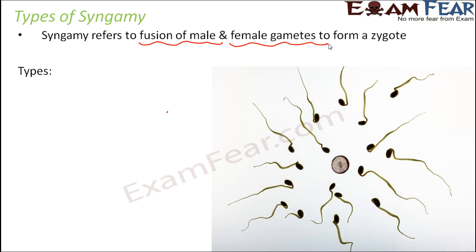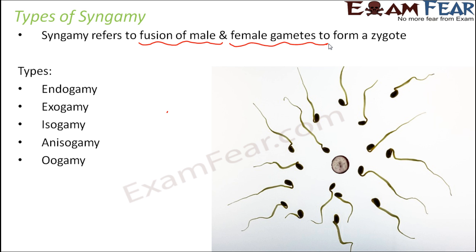There are many different types of syngamy: endogamy, exogamy, isogamy, anisogamy, oogamy, and hologamy. So these are the six types of syngamy. Let us talk about each of these types in more detail.